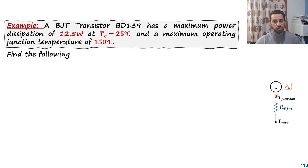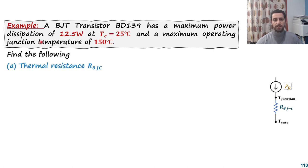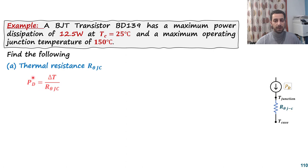The temperature at the junction is not known, but we know the maximum junction temperature should be less than 150°C, and the temperature at the case is 25°C. The maximum power dissipation is 12.5 W. Let's find the thermal resistance R_θ between the junction and the case. To find R_θ, we recall the thermal Ohm's law: the current, which represents power dissipation, times the resistance equals the difference in voltage — or temperature in this case.